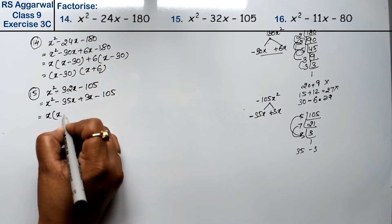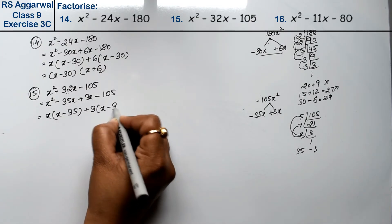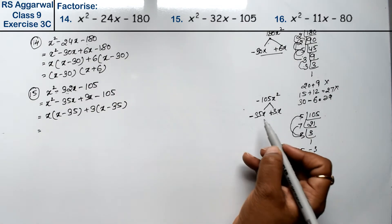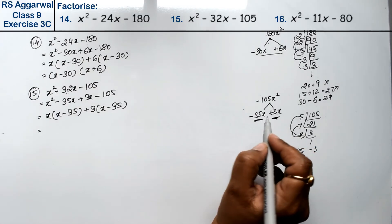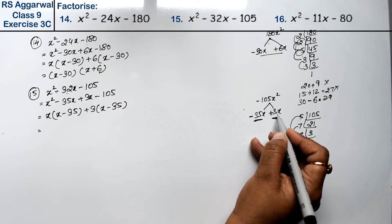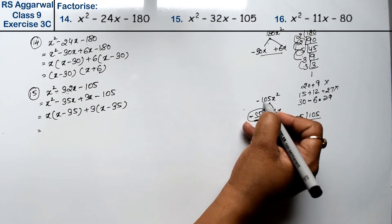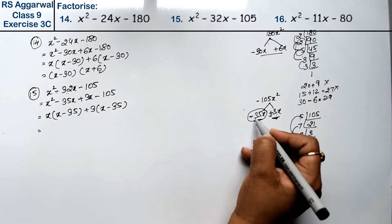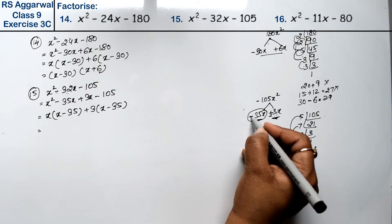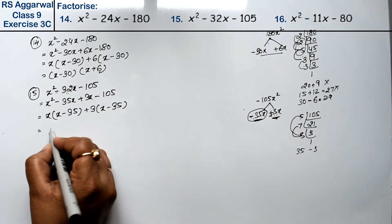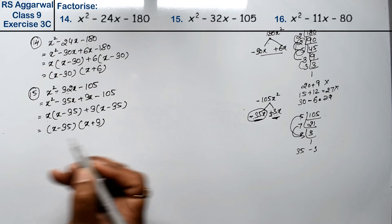So x is common, giving x minus 35. Plus 3 is common, giving x minus 35. So x minus 35 is common. Look — since there is minus, the greater sign will be minus. We had to get minus 32 with 35 minus 3 equalling 32. Multiplying the signs: minus times plus gives minus. So the answer is x minus 35 times x plus 3.